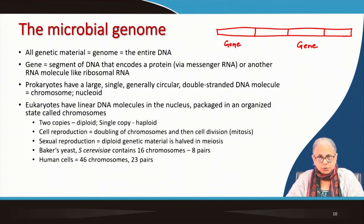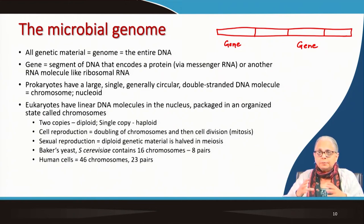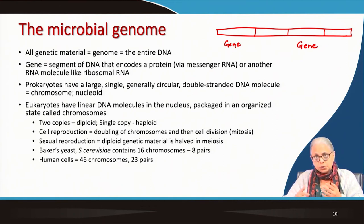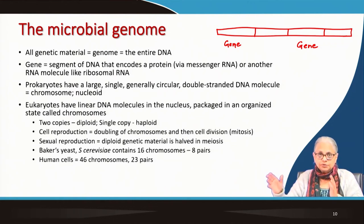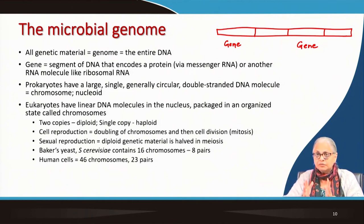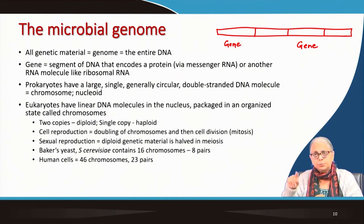Eukaryotes have linear DNA in the nucleus. Because the nucleus is very well-defined, the chromosomes are packaged in a very organized state. If there are two copies of the chromosome, it is called a diploid cell; if there is a single copy, it is called a haploid cell. For cell reproduction, chromosomes have to be doubled and then the cell divides. In sexual reproduction, the diploid genetic material is first split into two haploid cells in a process called meiosis. Cell division is mitosis, and the halving of the diploid cell — which happens only in sexual reproduction — happens by the process of meiosis.